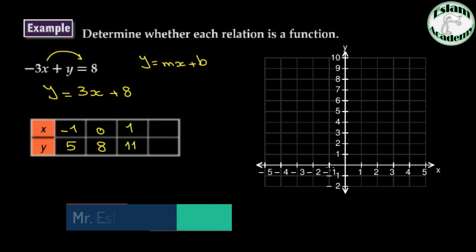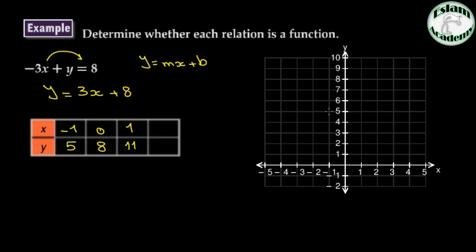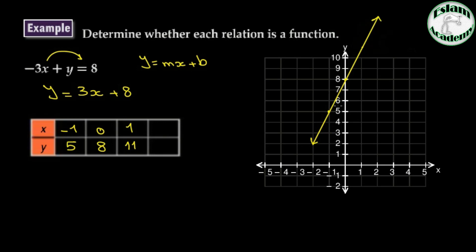So the first point is (negative 1, 5), the second is (0, 8), and the third is (1, 11). After graphing these points and drawing the line, you will find a linear relation. You cannot draw any vertical line intersecting the graph at two points, so this relation is a function.